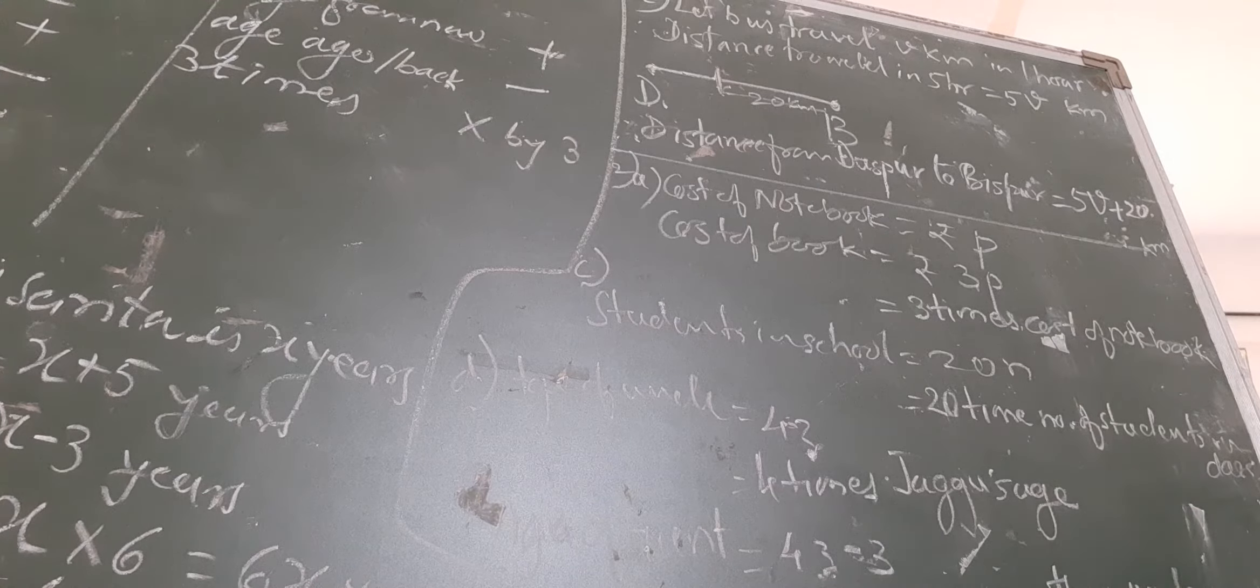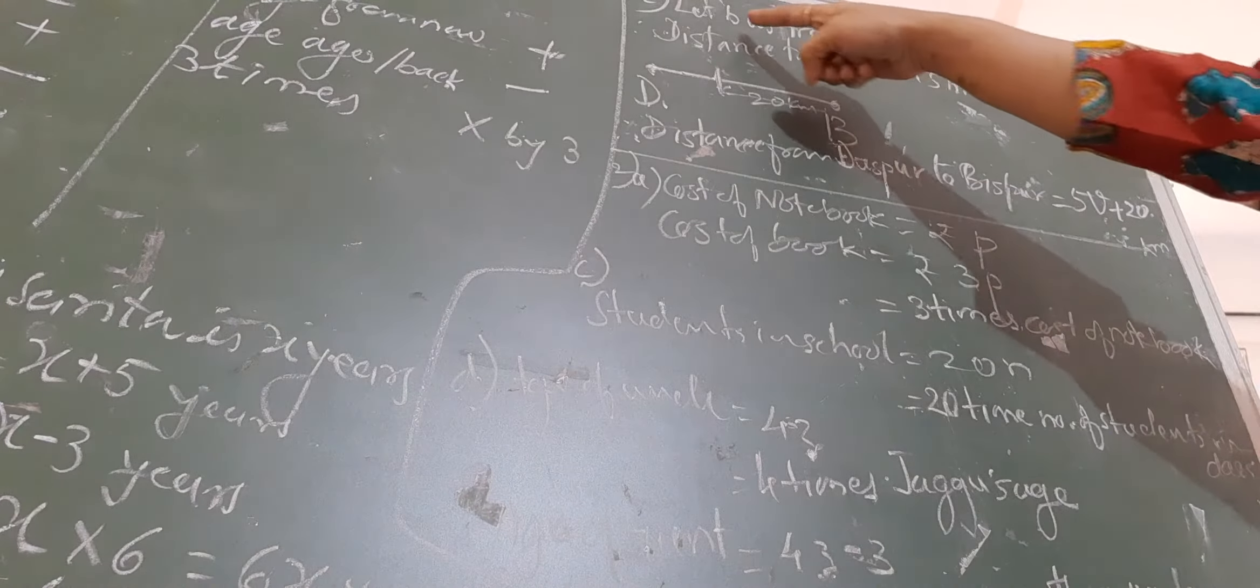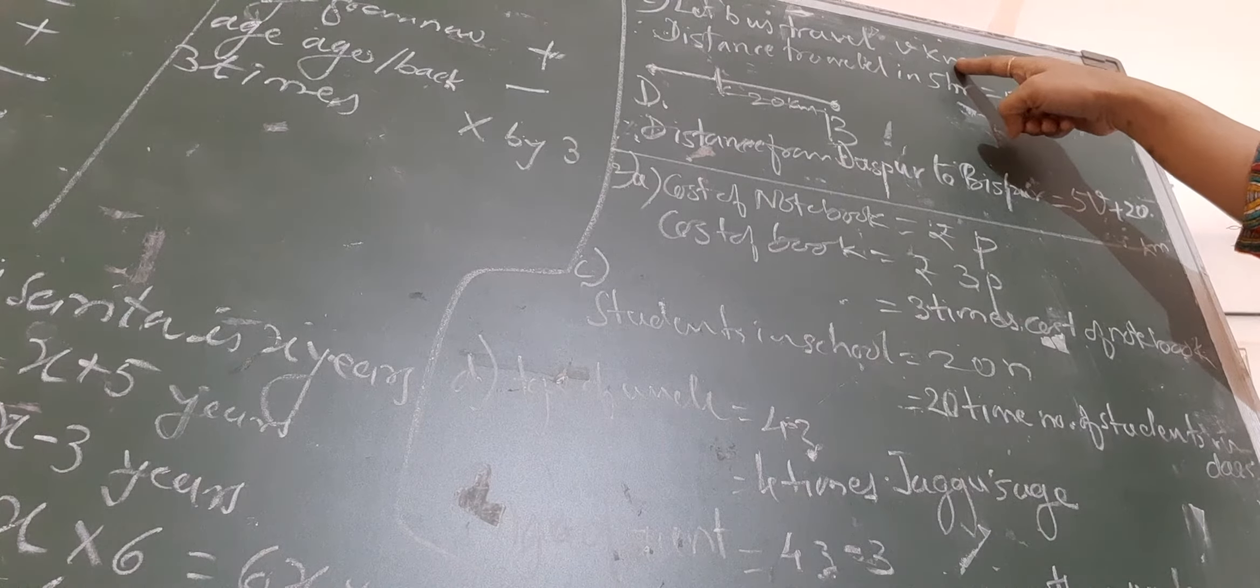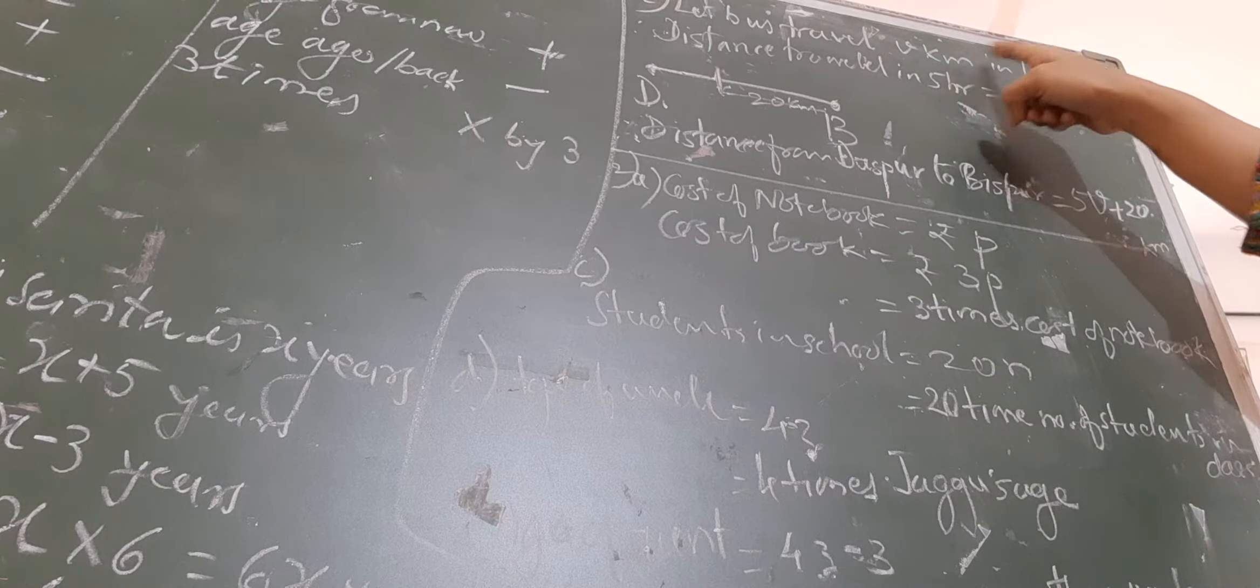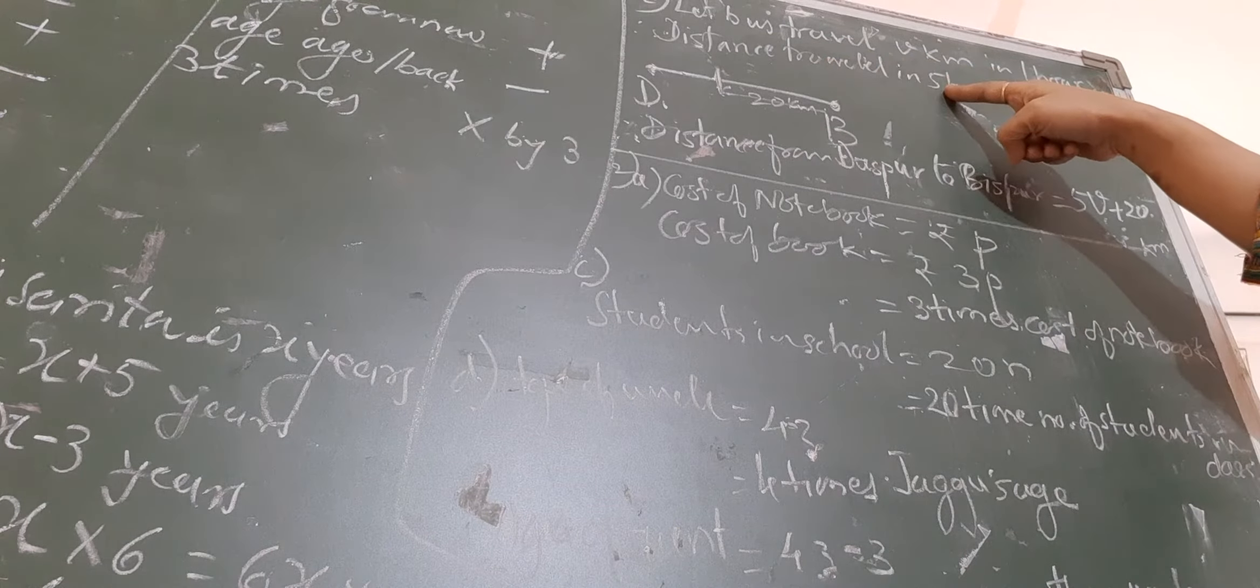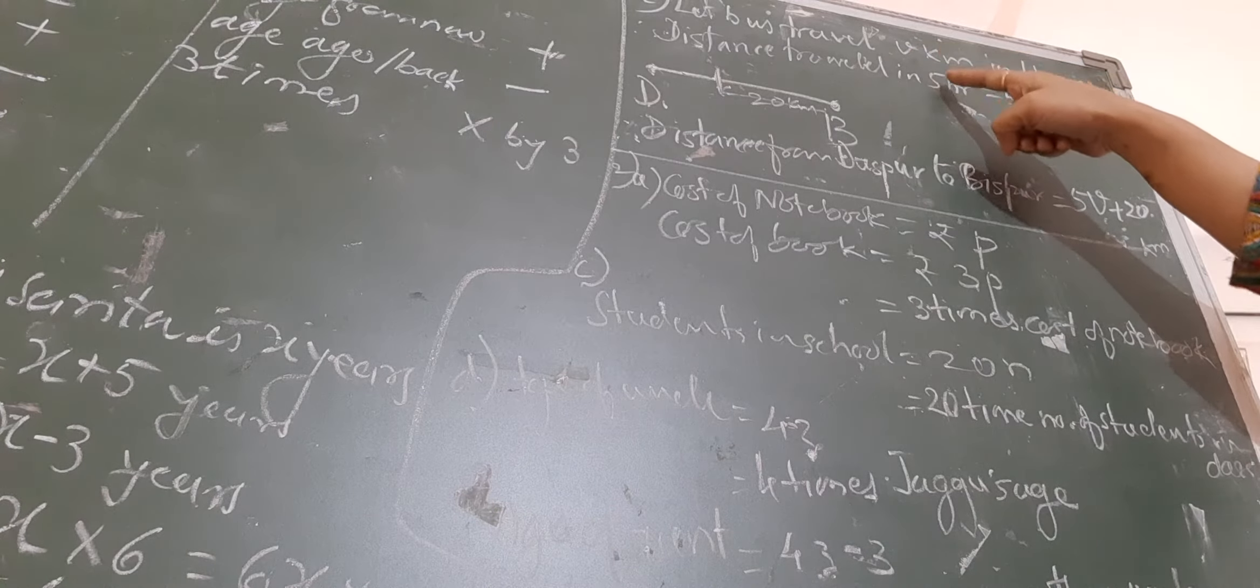Now, in the next question, it is given that the bus is traveling V kilometers per hour. It means in one hour, distance traveled is V kilometers. V kilometers it is traveling in one hour. So how much is the distance traveled in 5 hours? That will be 5 into V.